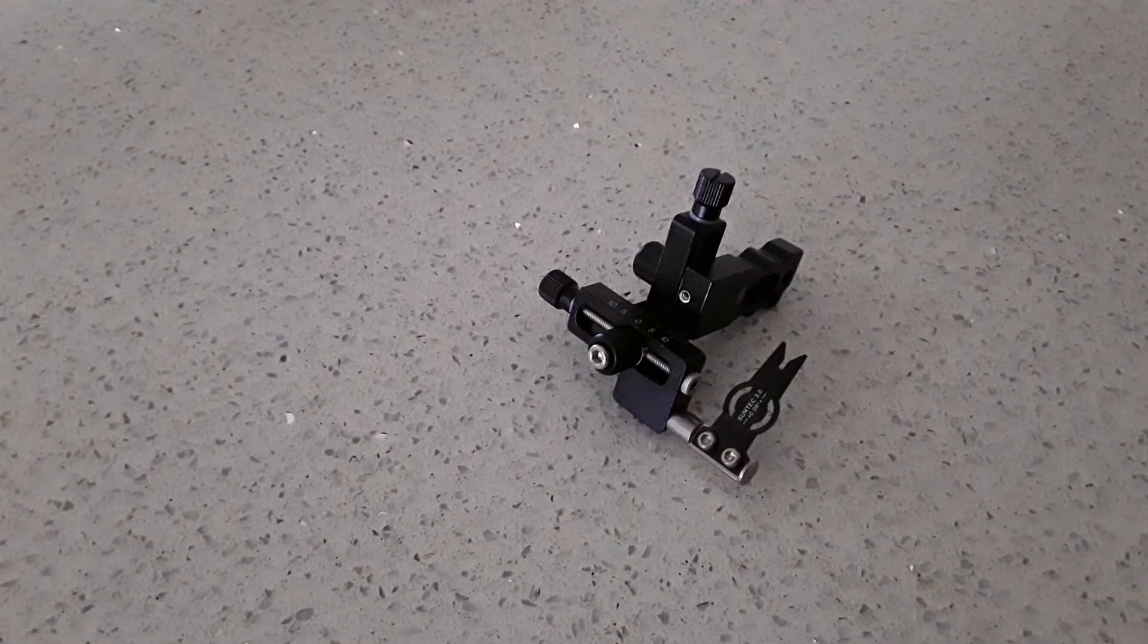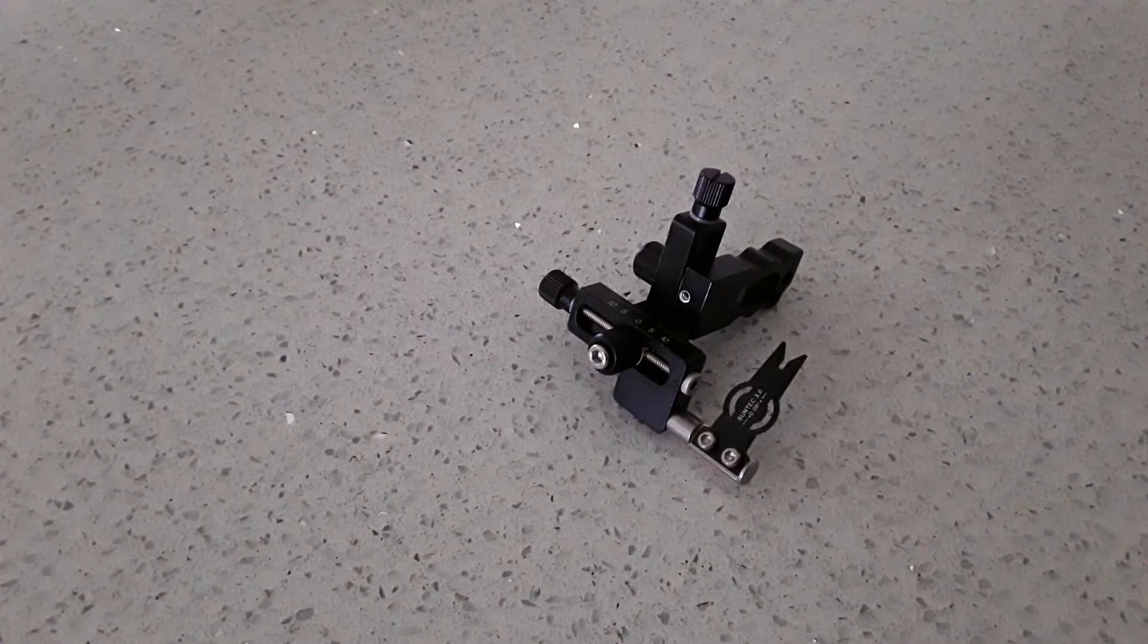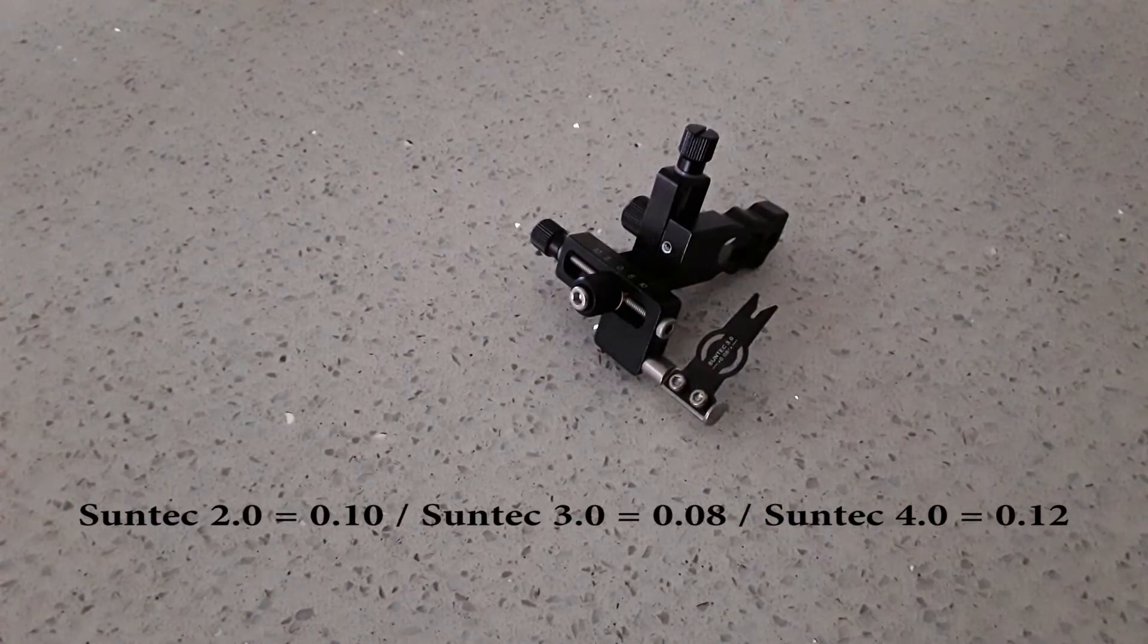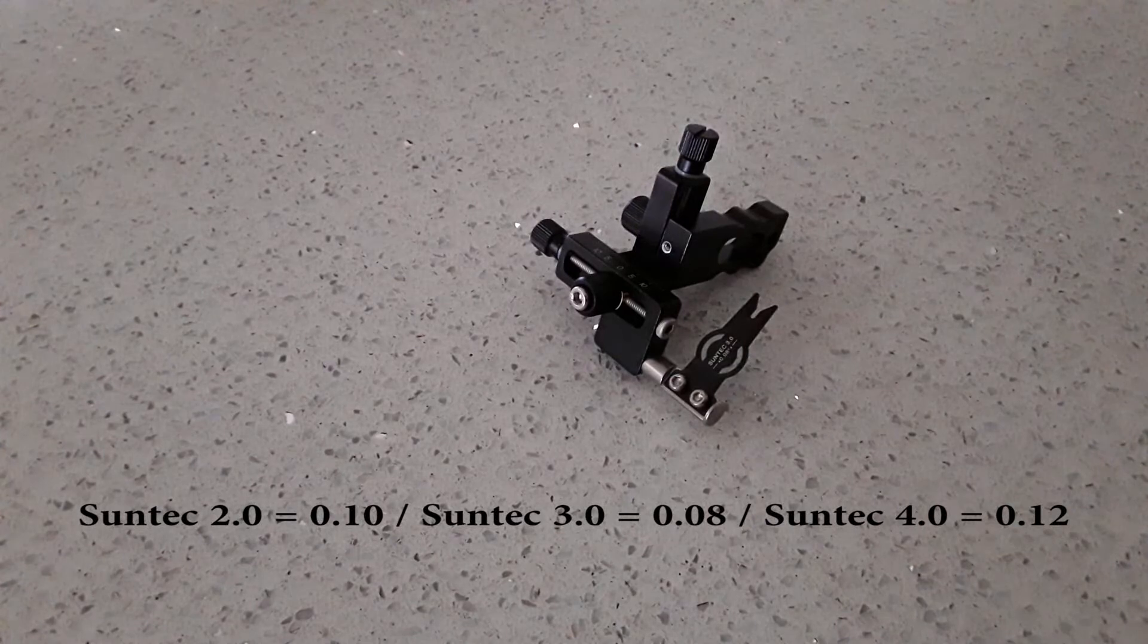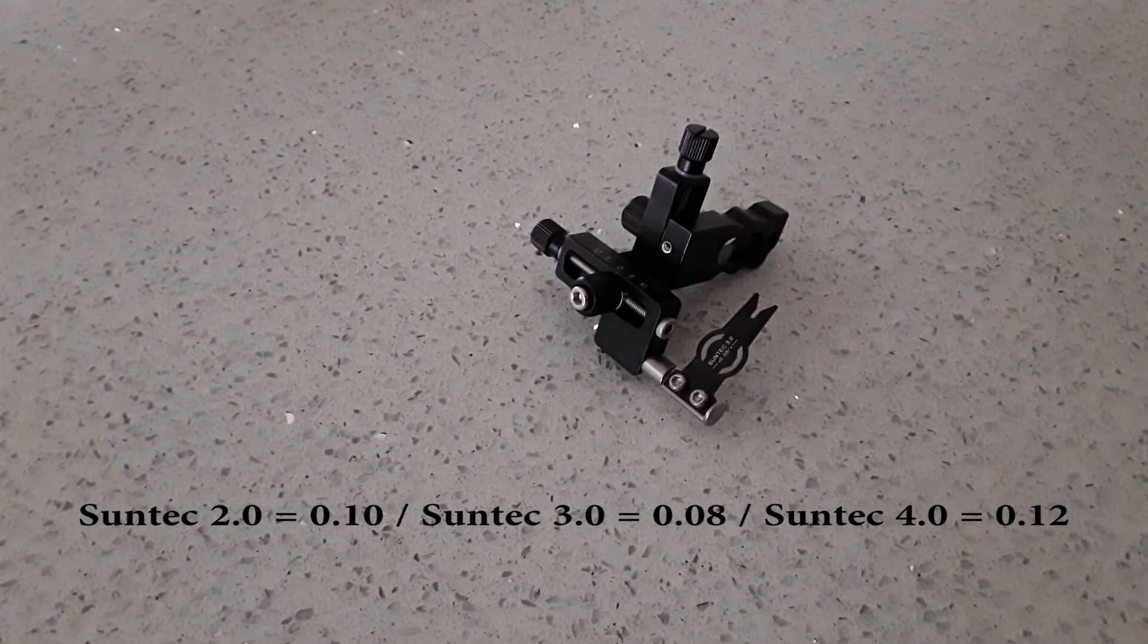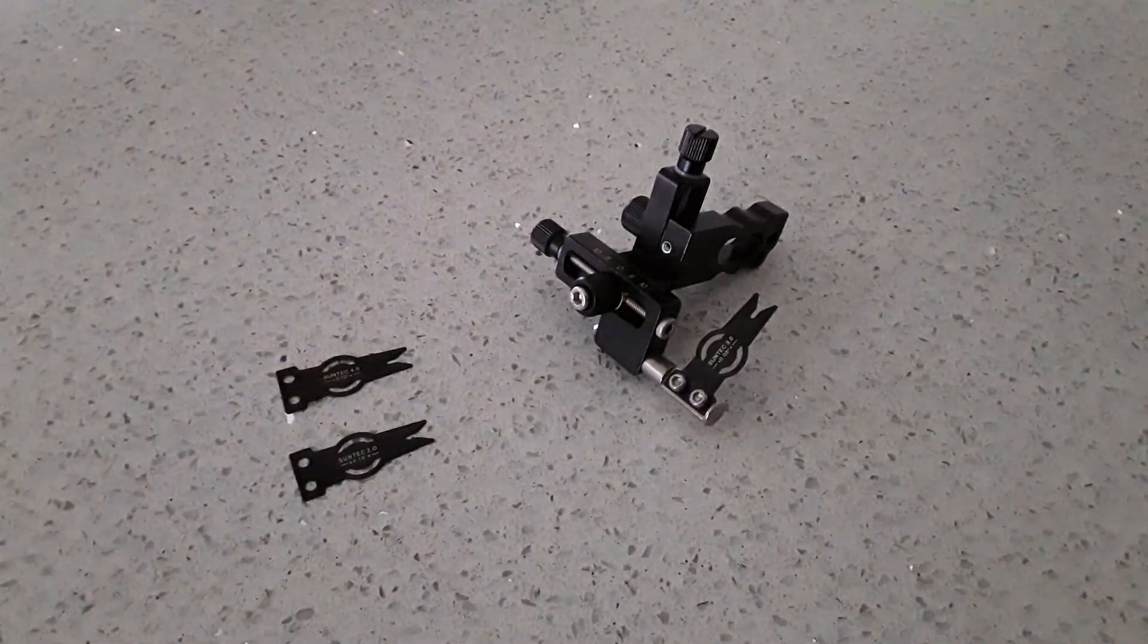You also get the forked tongues. Some of the images on the web when they sell it only seem to show one that comes on it, and the description doesn't mention anything, but you do get another two. So the three that you get with it are the two, three, and four plates, and they are 0.08, 0.10, and 0.12.